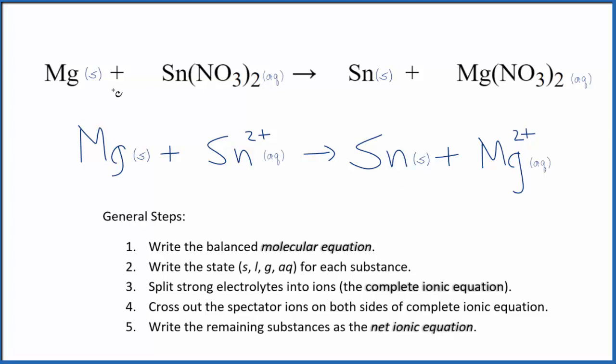I should note that this is a single displacement reaction. That's the type of reaction where the Mg pushes the tin out. Then we have the tin all by itself. This is Dr. V with the balanced net ionic equation for Mg plus Sn(NO3)2. Thanks for watchin'.